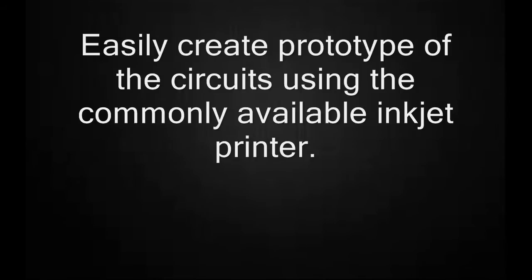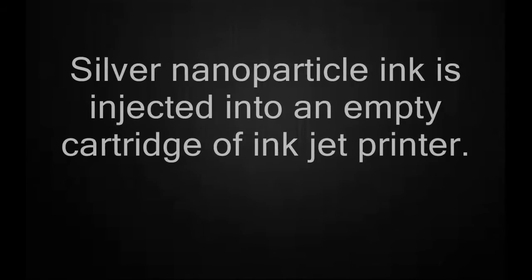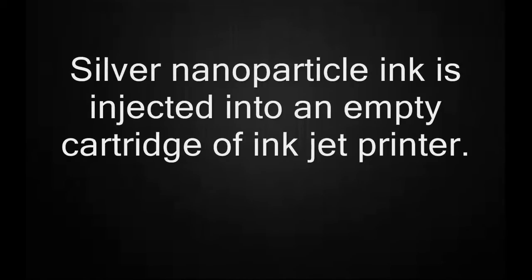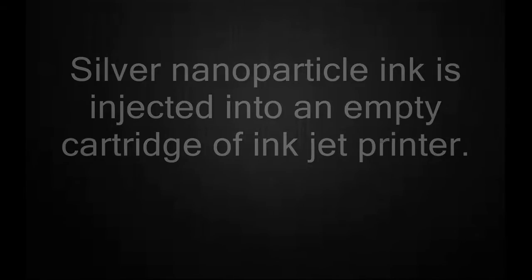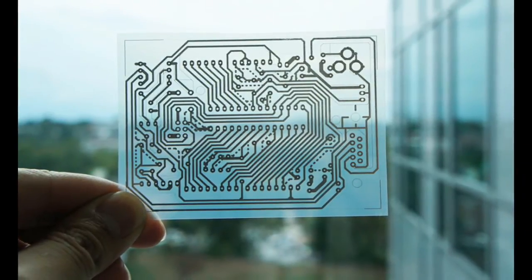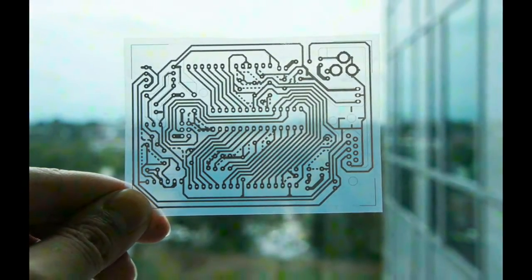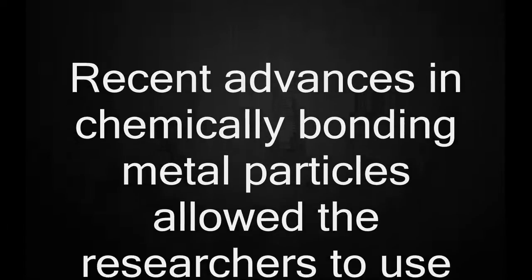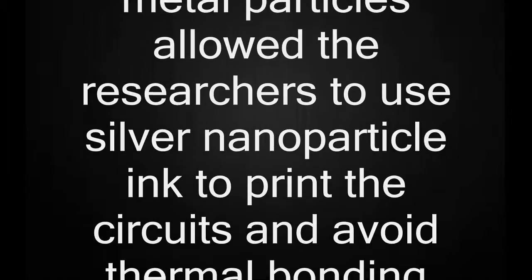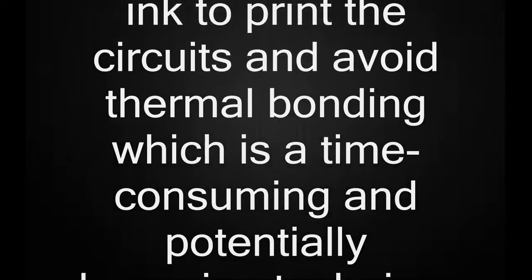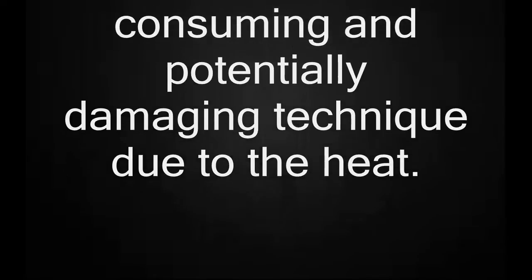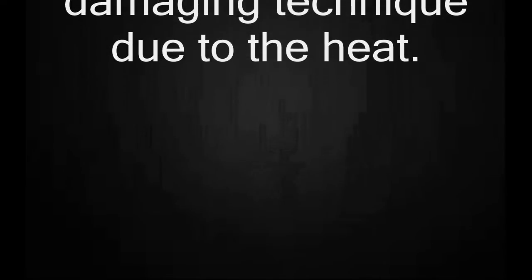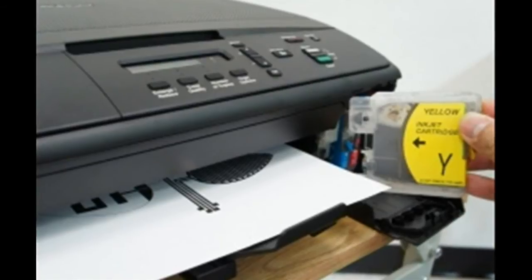Silver nanoparticle ink is injected into an empty cartridge and used in conjunction with an off-the-shelf inkjet printer to enable instant inkjet circuit prototyping. Recent advances in chemically bonding metal particles allowed the researchers to use silver nanoparticle ink to print circuits and avoid thermal bonding, which is a time-consuming and potentially damaging technique due to the heat.